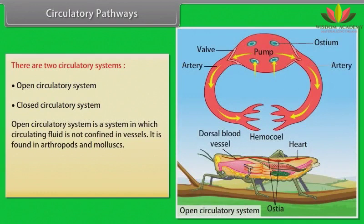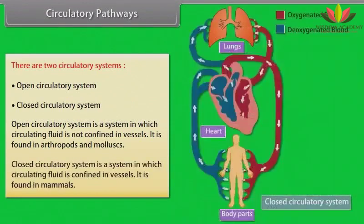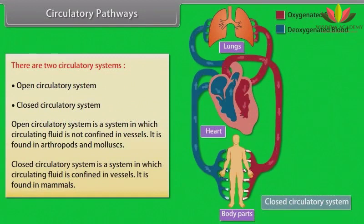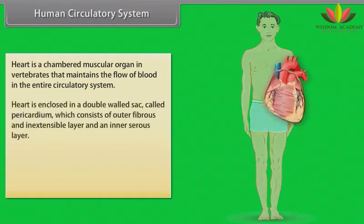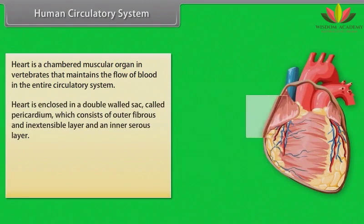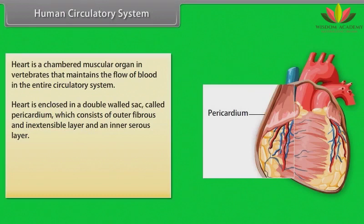An open circulatory system is one in which circulating fluid is not confined in vessels; it is found in arthropods and mollusks. A closed circulatory system is one in which circulating fluid is confined in vessels; it is found in mammals. In the human circulatory system, the heart is a chambered muscular organ in vertebrates that maintains the flow of blood in the entire circulatory system.